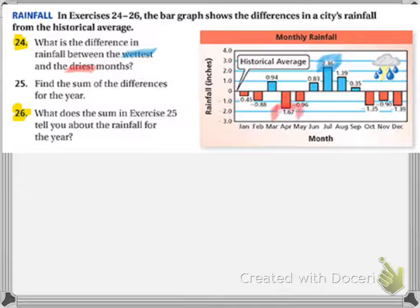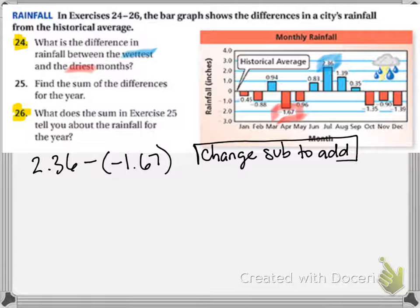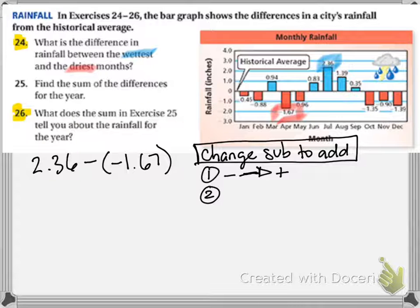So they want to know what the difference is, so let's set that up: 2.36 minus negative 1.67. Okay, and then with subtraction, we want to change subtraction to addition, and we do that by changing the sign and then finding an opposite.